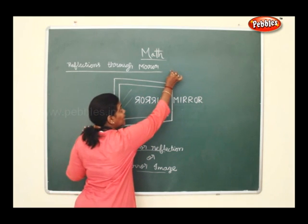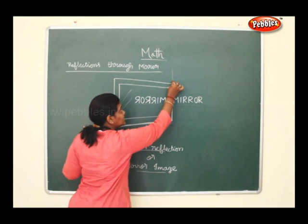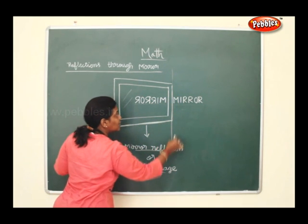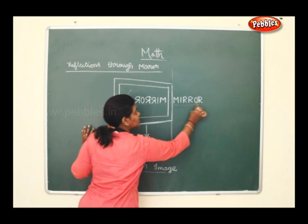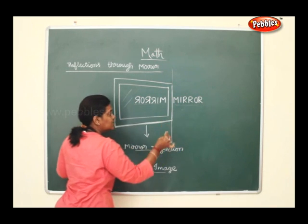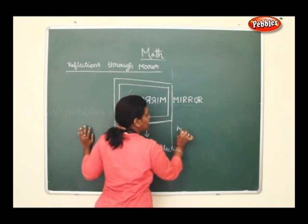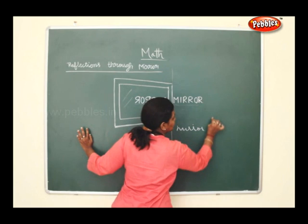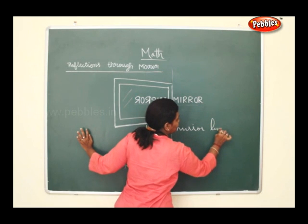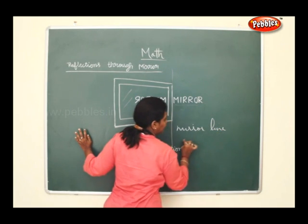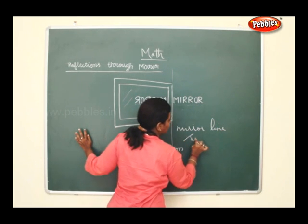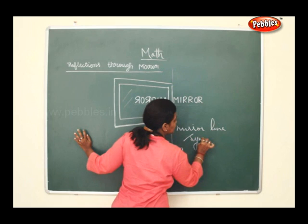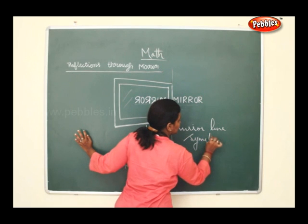You find a line that separates the image and the word written here. This is called mirror line symmetry.